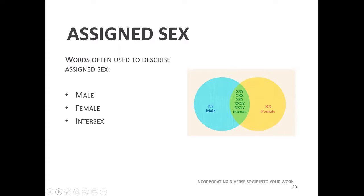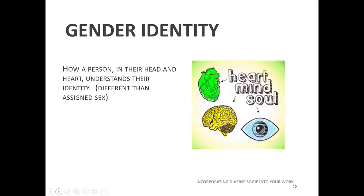Assigned sex is something someone tells us early on or in the womb. Gender identity, on the other hand, is something we are letting others know about. Historically, we've thought of biological sex and gender as automatically congruent — if you're assigned male you're a boy, assigned female you're a girl. That works for a lot of the population, but not for everybody, and it gets trickier for folks who are intersex.